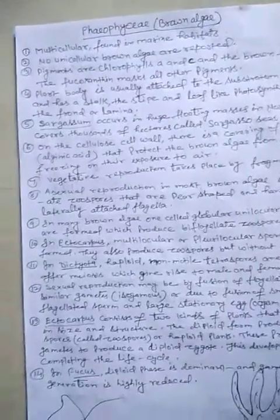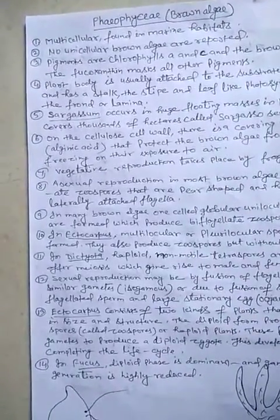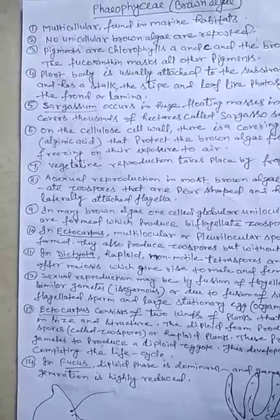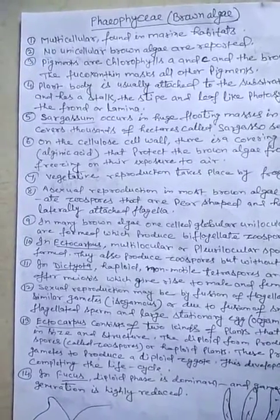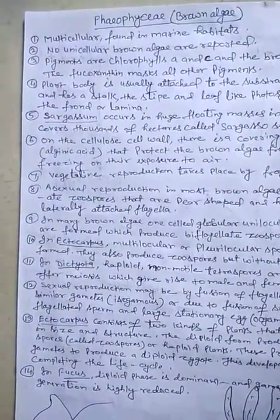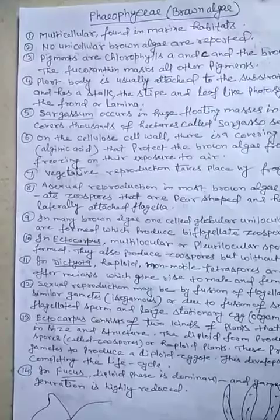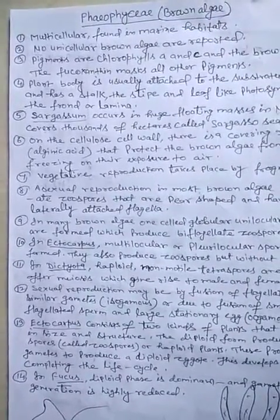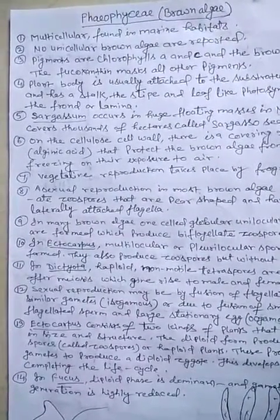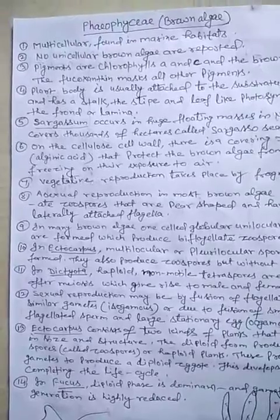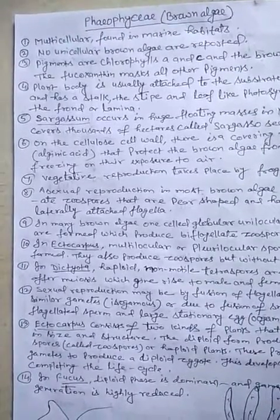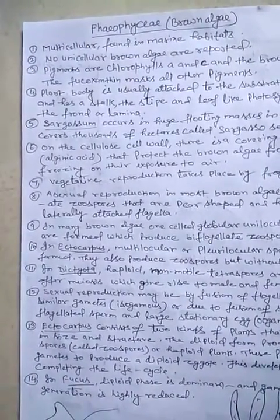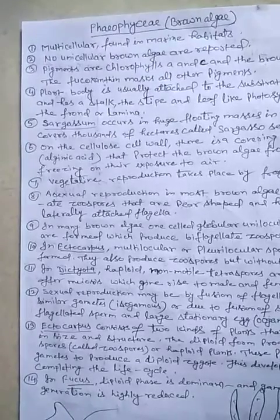Today we will study Phaeophyceae or brown algae. The brown algae or Phaeophyceae are multicellular and found in marine habitats. No unicellular brown algae have been reported.